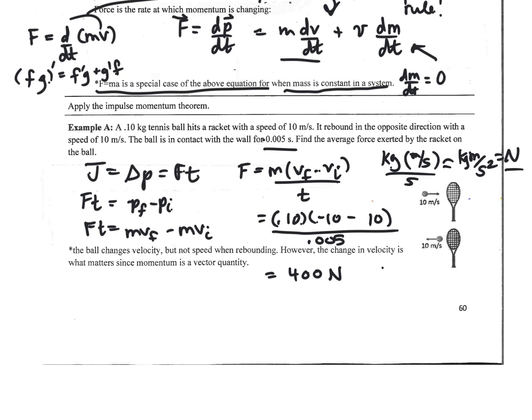Special note: the ball changes velocity but not speed when rebounding. However, the change in velocity is what matters. The ball had to come to a stop and reverse direction, and because it changed from positive to negative direction, there is a huge amount of force involved in that quick turnaround. So this answer makes sense.